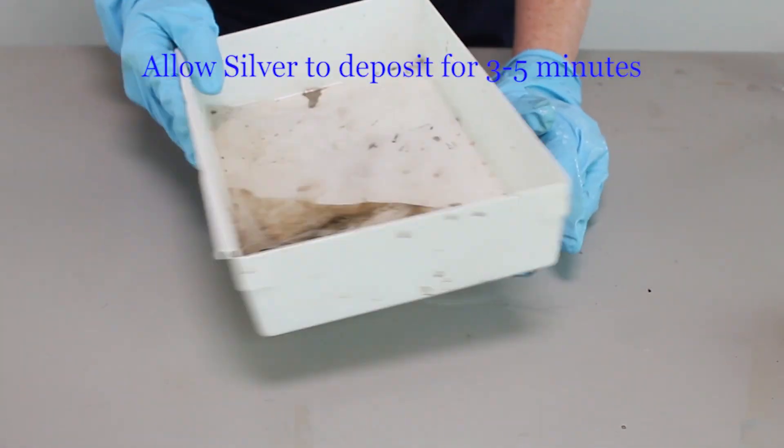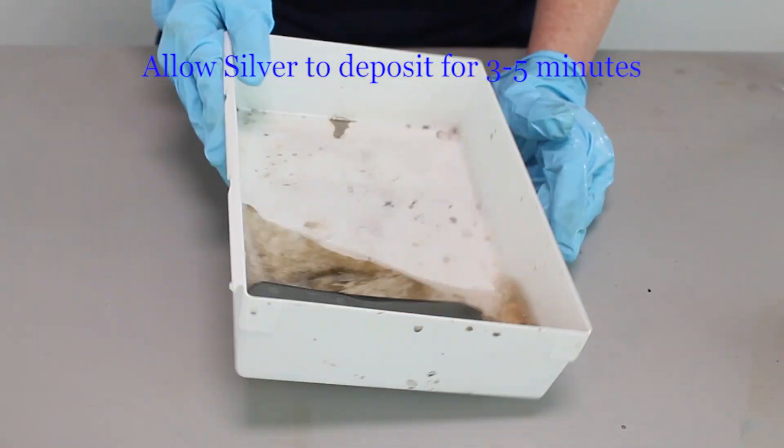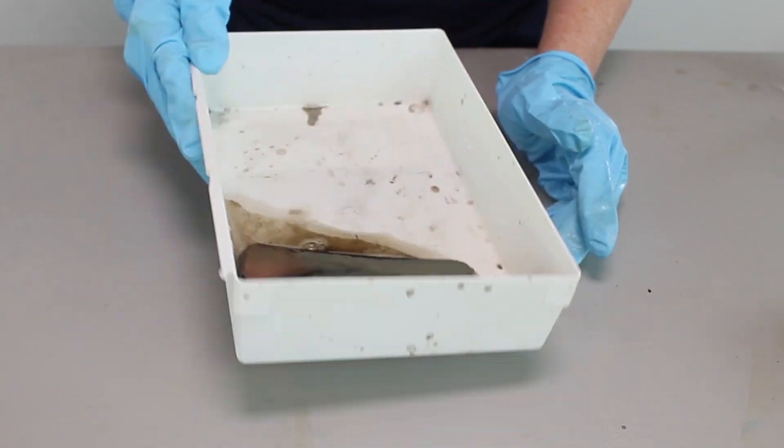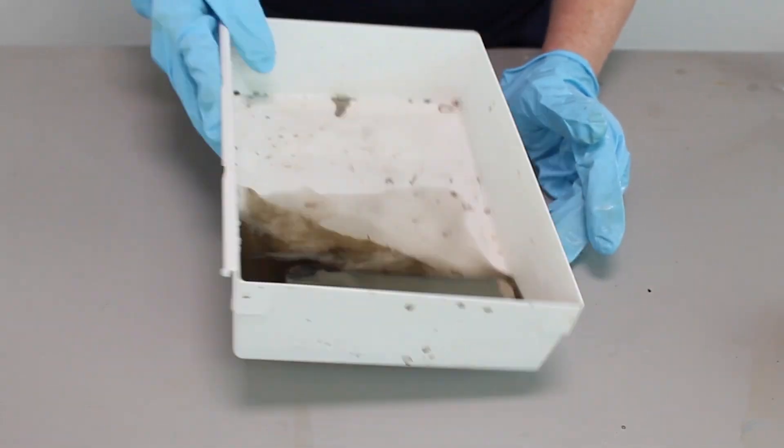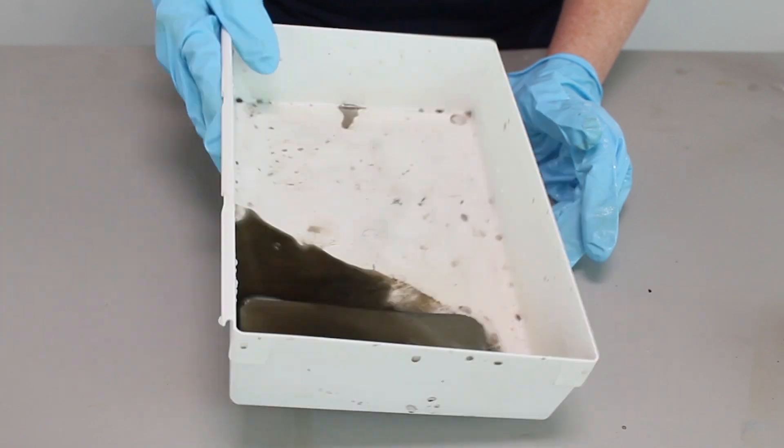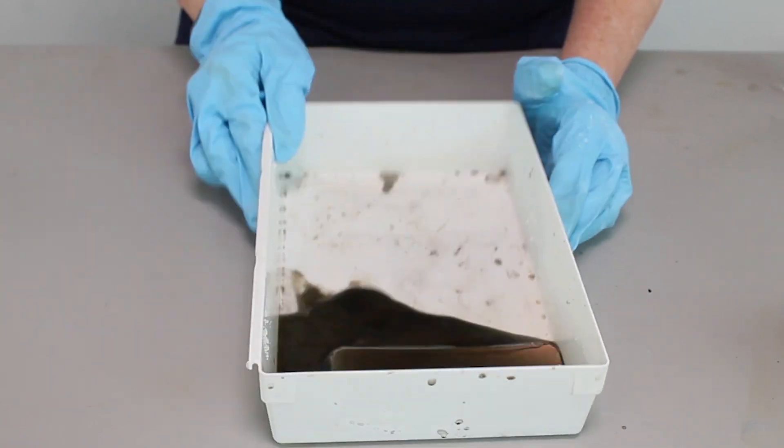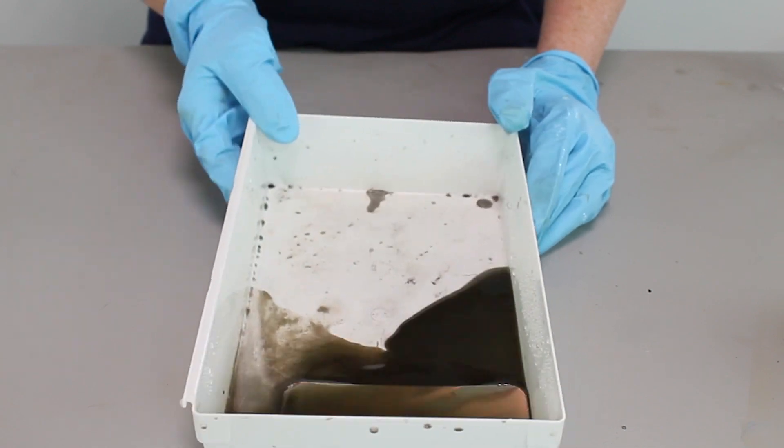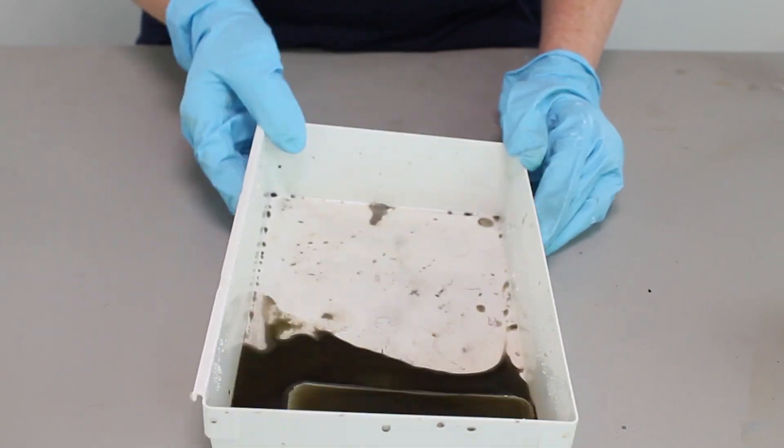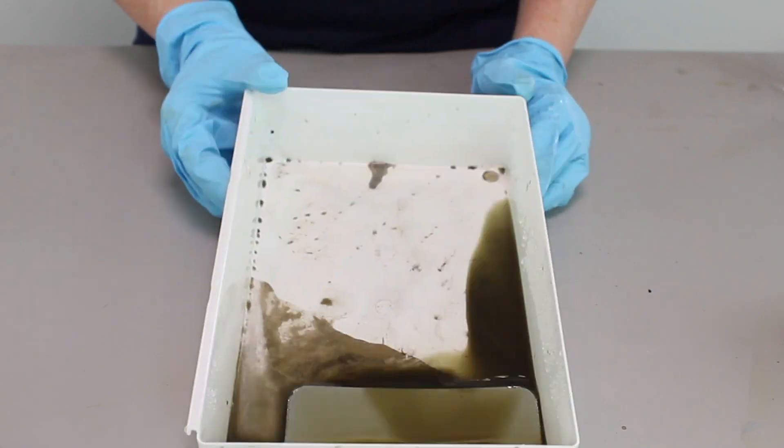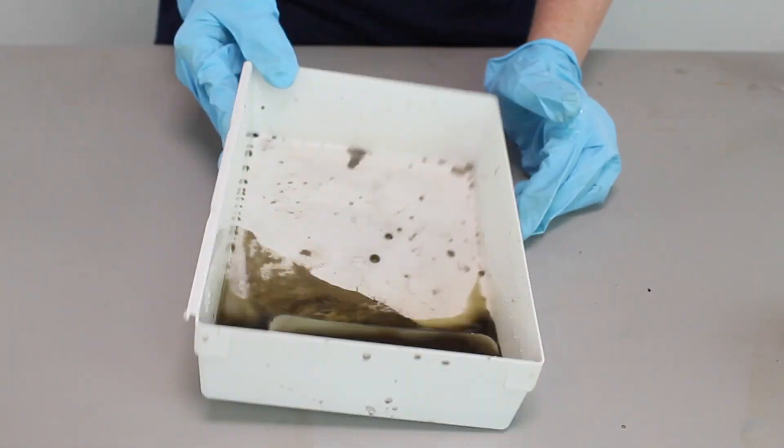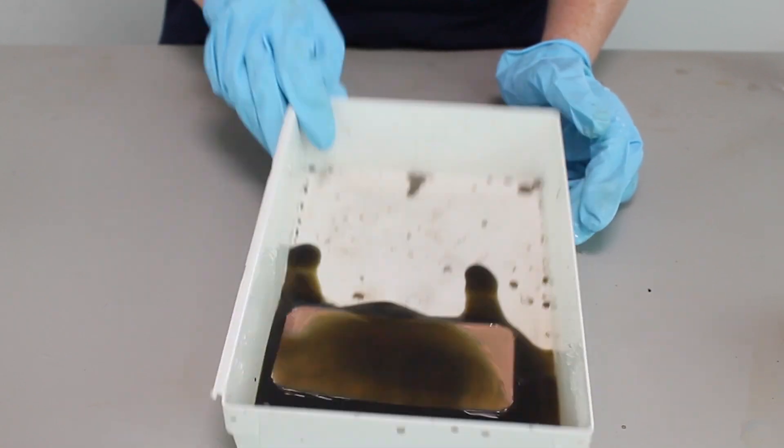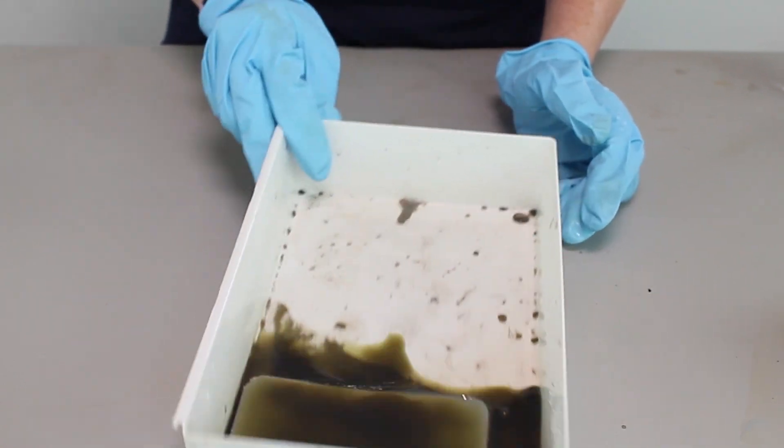So I'm allowing this to deposit for about three to five minutes, and you want to rock it back and forth. The chemicals need to wash over the surface. Especially in this shallow bath technique, this allows the chemicals to really flow evenly. If I just let the piece sit there, then you may find that there's one part that because of gravity, the chemicals just don't reach. And obviously that would create an uneven deposit. So just gently rocking it back and forth.